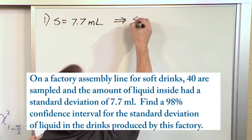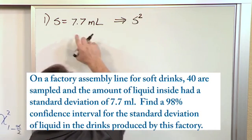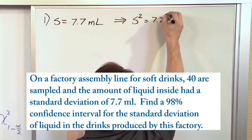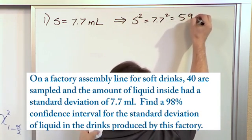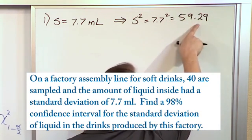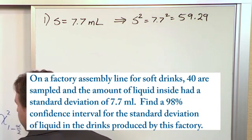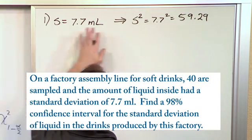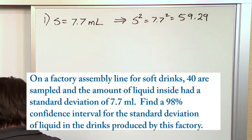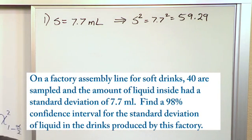And from that, we can then square S and we'll get 7.7 squared, which is 59.29. So in this problem, we were not given the variance. We were given the standard deviation. But in our equation down here, we're going to end up using S squared. So we'll just square it first and kind of have it ready to go, so that when we get to that step, it'll be all ready.